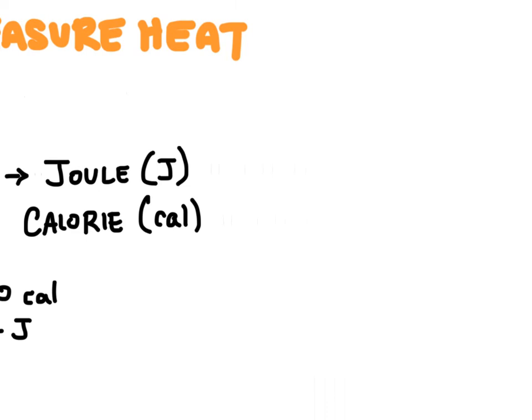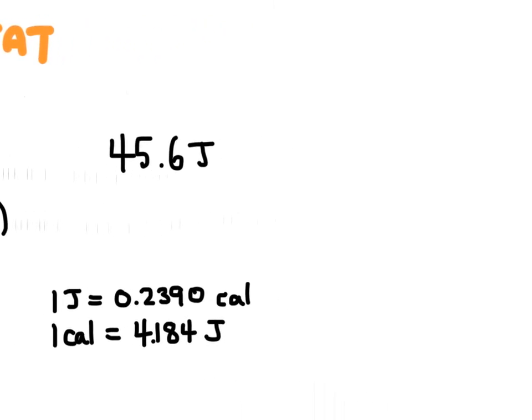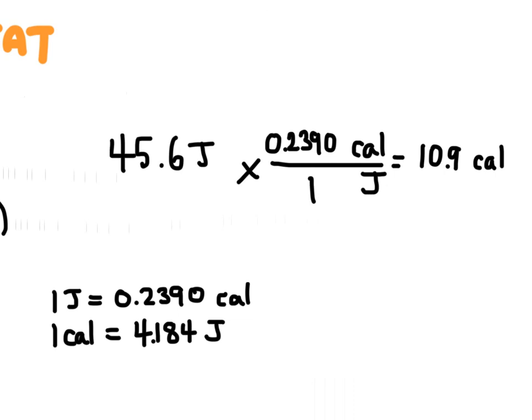So for example, if I knew that a chemical reaction released 45.6 joules of energy, how many calories would that be? Well, we can create ourselves a little conversion factor using this relationship here. So we could take that 45.6 joules, and we can multiply that by a conversion factor that's going to give us calories and get rid of the joules. It doesn't matter which one of these I choose to work with. I think I'll go with this one right here. And I'll just put one joule on the bottom, and that for every one joule, we're going to have 0.239 calories. And so this would be 10.9 calories. So that would be the same thing as 45.6 joules.